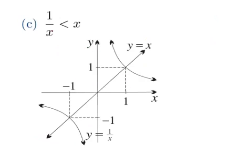Now, let's have a look at another example. We want to find the values for which 1 over x is less than x. Now, we see 1 over x is here, and y equals x is here.